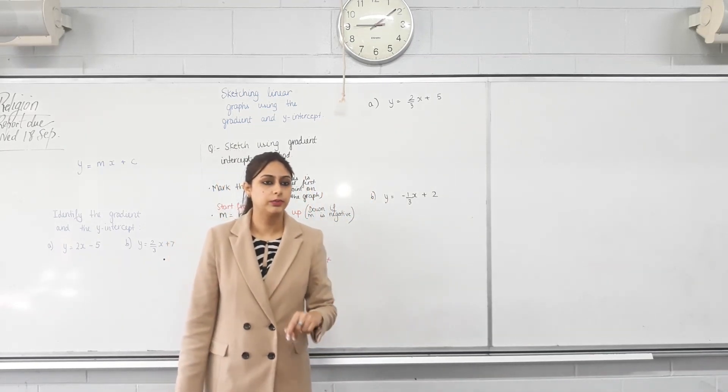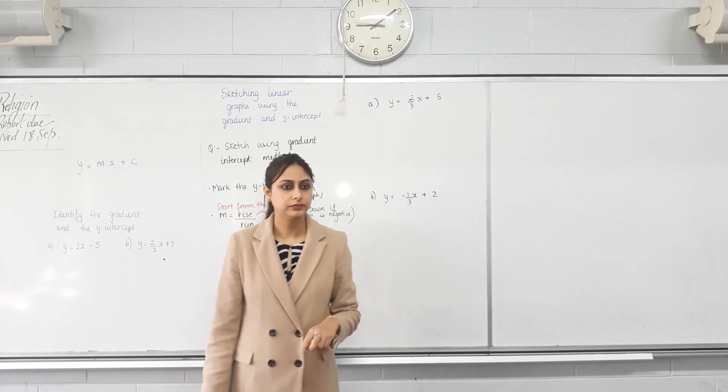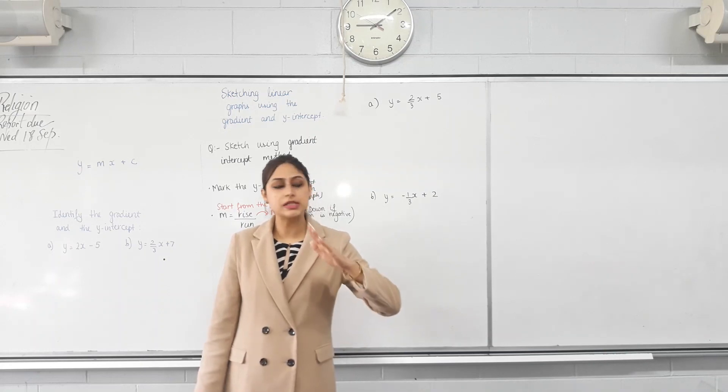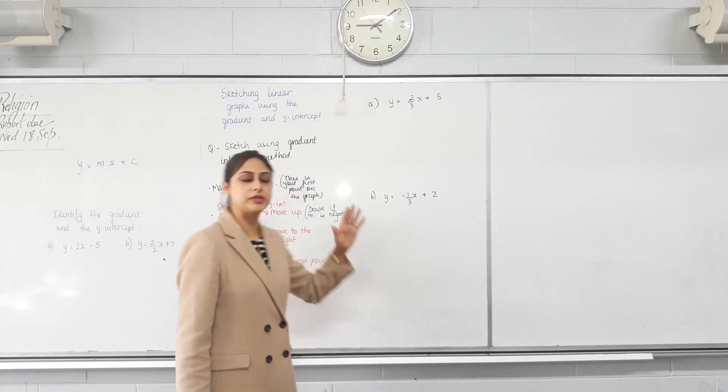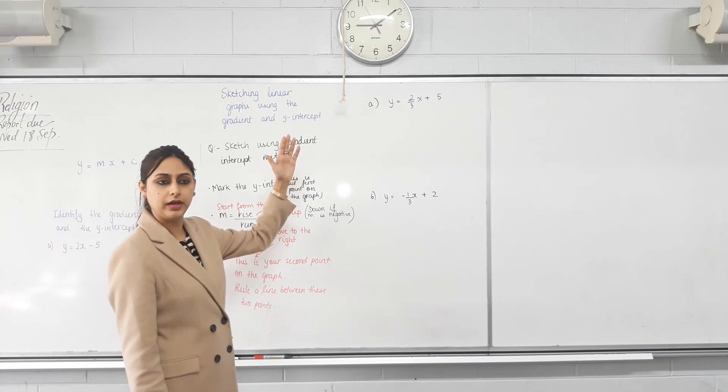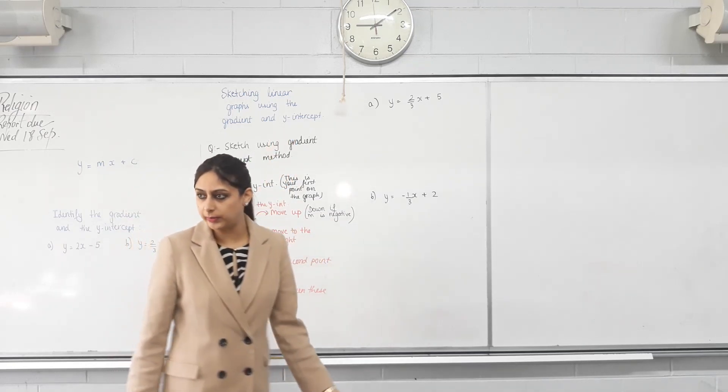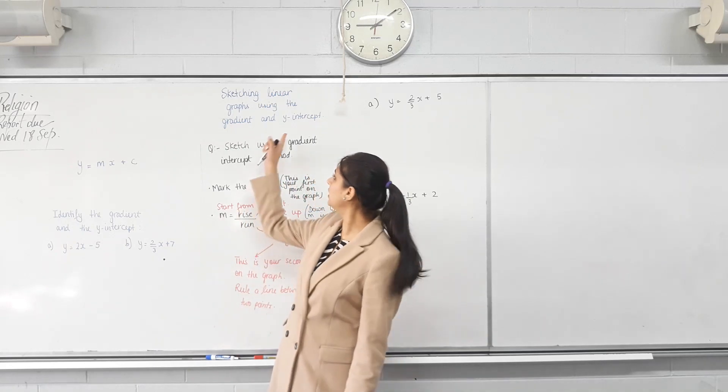Sketching linear graphs using the gradient and the y-intercept. What is the gradient? We discussed it last lesson. It's rise over run. It tells us how steep the line is. Positive gradient represents a line going up, left or right. Negative gradient represents down, left or right. You all remember that? And what's the y-intercept?